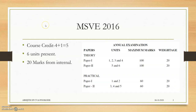In MSOE 2016, the course credit is 4 plus 1, that is 5. In a week, we will have 4 theory classes and 1 practical class. There are 6 units. The marking structure is 80 marks for the annual examination and 20 marks from internal examination.